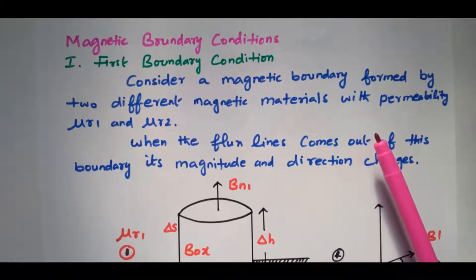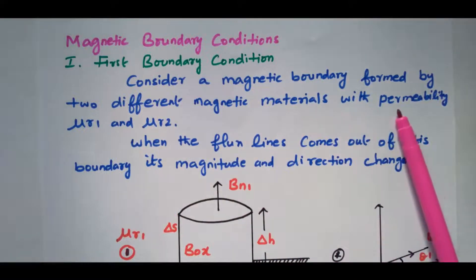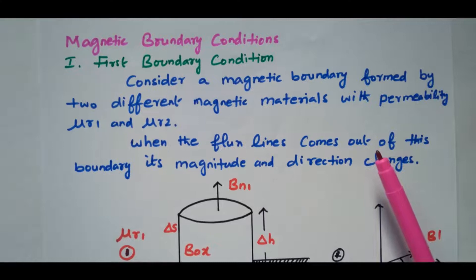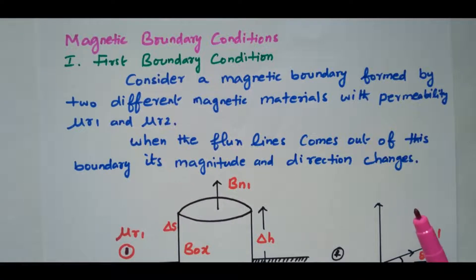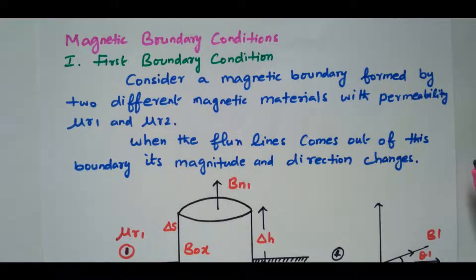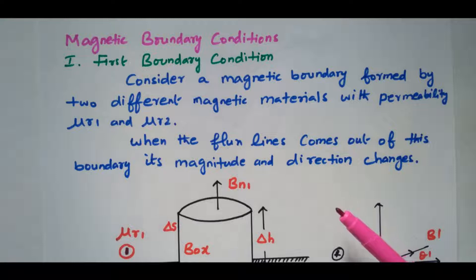The boundary is nothing but two different magnetic materials combined together. The line separating the two magnetic materials is called a boundary. Now, consider a magnetic boundary formed by two different magnetic materials with permeability mu_R1 and mu_R2. When flux lines flow from one magnetic material to another, there will be a change in magnitude and direction. We are going to study in this boundary condition whether there is any change in flux, or any deviation in magnitude and angle.